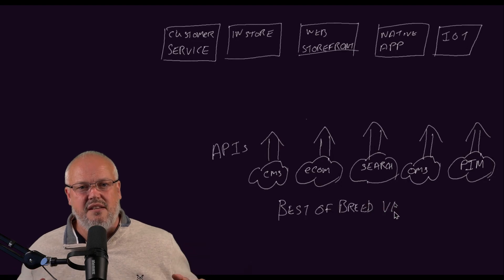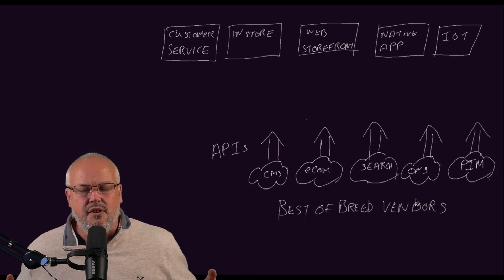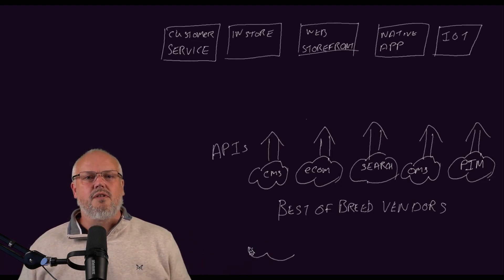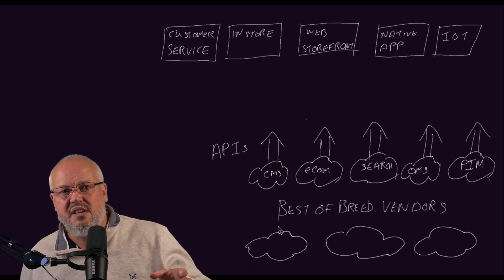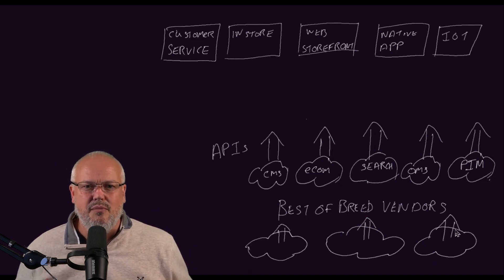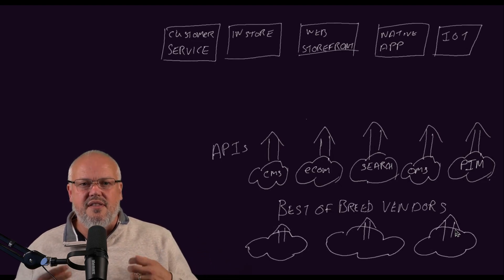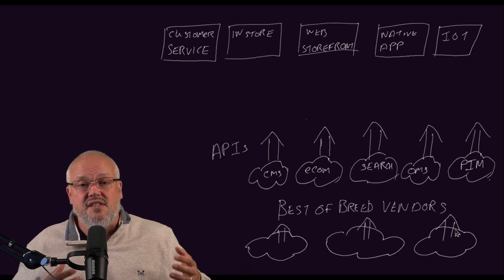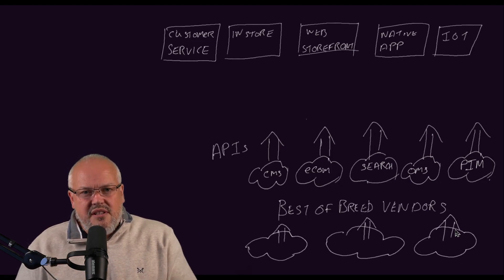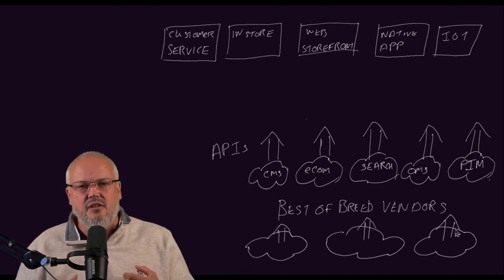What you get instead are a set of services from lots of best-of-breed vendors, and all of those can be plugged in where you need to across all your different heads and channels. You can focus on choosing the best-of-breed suppliers that fit your business — you don't have to make those compromises anymore where you choose a suite because it has most of what you need. You can select the software that you really need for your own business challenges. Going down a full headless e-commerce route gives you full flexibility to integrate with any head and any channel, and to select technology suppliers that really align to your business goals.